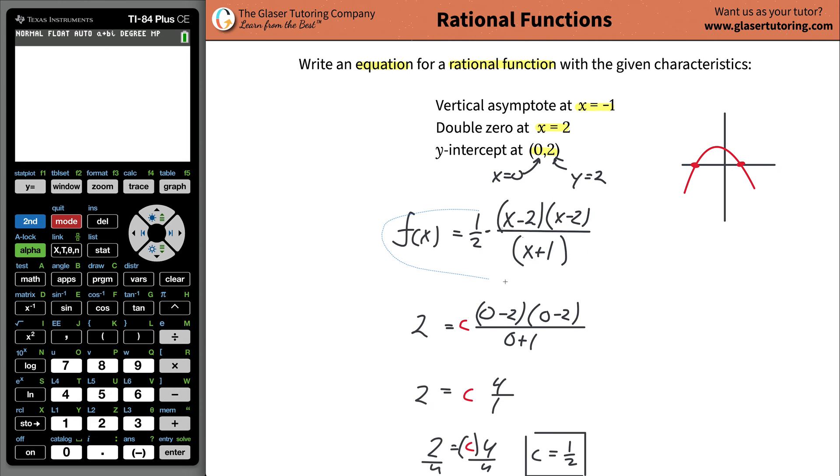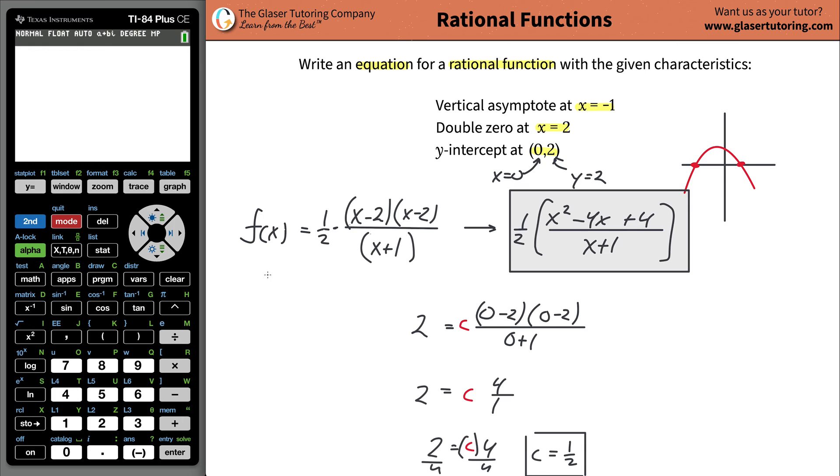What that means is your full blown function is going to be one half times this whole thing. And that's it. The function's done. You can reorganize it if you like. You can foil the top—it's going to be x squared, then add these terms together, so that's negative four, slap on an x, then multiply them, that's a positive four. The bottom just remains x plus one. And do not forget your constant in the front of one half. That would be the final answer.